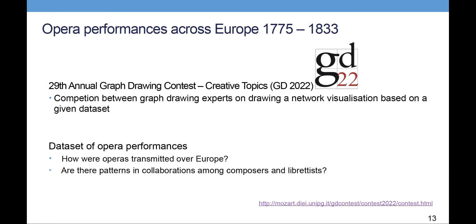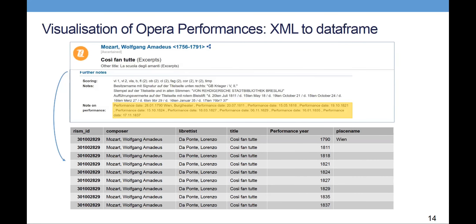Let's have a look at the data. At the top you see a screenshot of RISM Così fan tutte, and in yellow there is the performance data. As you can see, it's converted into a table with composer, librettist, title, performance year, and place name — and especially the performance year and place name correspond to the yellow part of this slide.